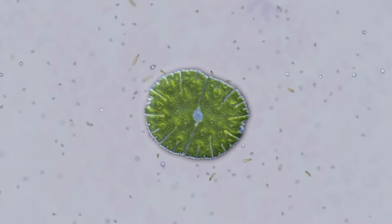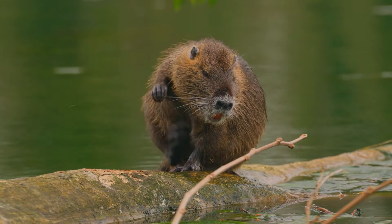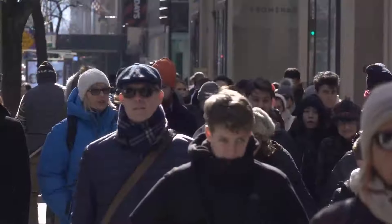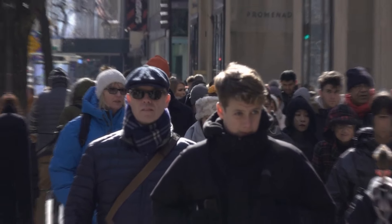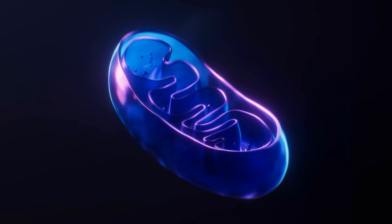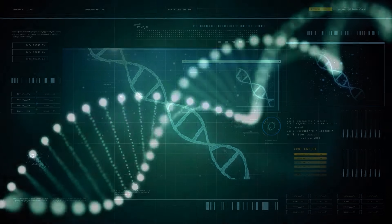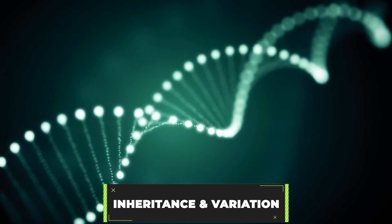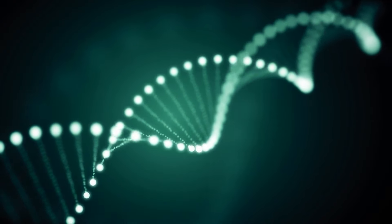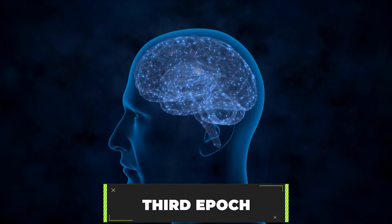Over millions of years, life evolved from single-celled organisms to multicellular organisms, plants, animals, and ultimately humans. This epoch introduced biological evolution as a powerful mechanism for increasing complexity, with DNA serving as the blueprint for life.